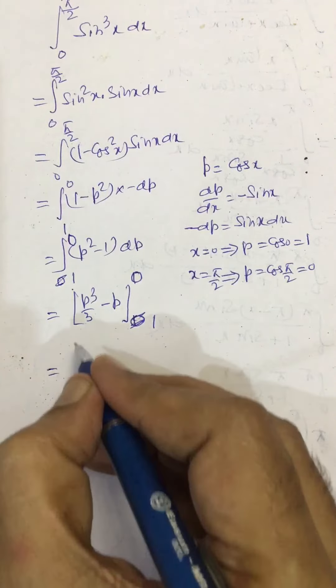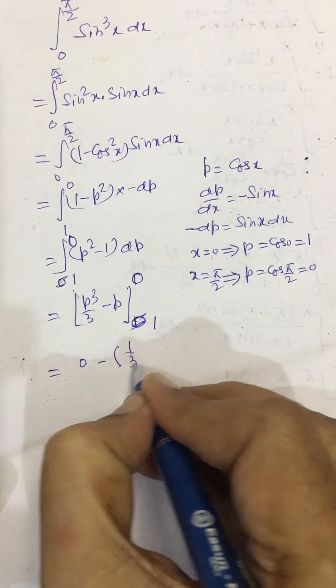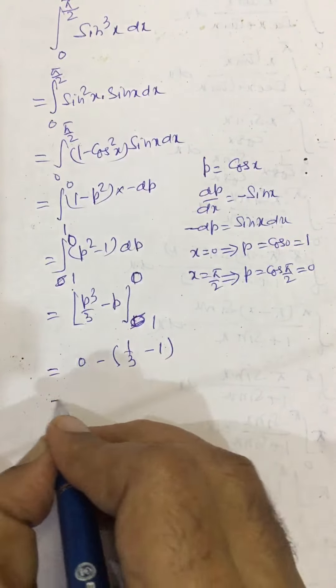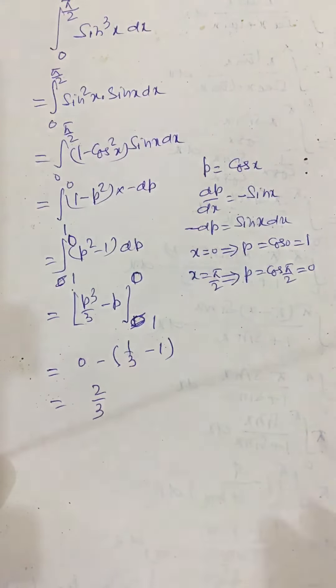So putting this we get 0 minus 1 by 3 minus 1. So this becomes 2 by 3.